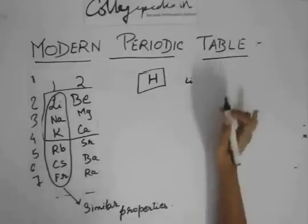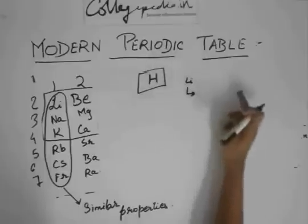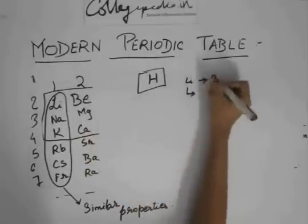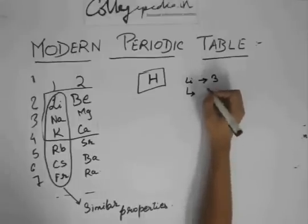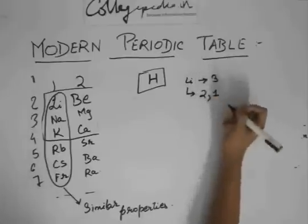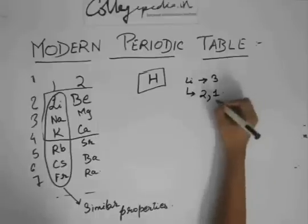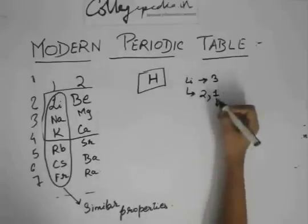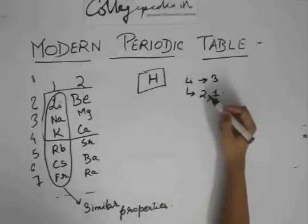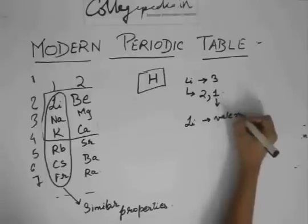If you write lithium's electronic configuration — hydrogen has atomic number one, helium two, so lithium has atomic number three. Its electronic configuration will be 2,1. So what would be its valency? It would be one, because it will lose one electron to make it a stable doublet with two electrons. So lithium has valency one.